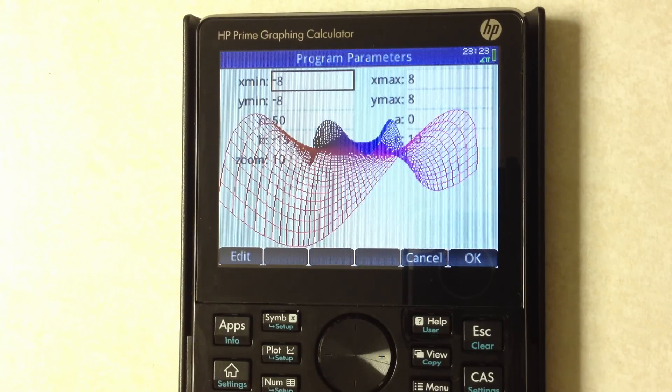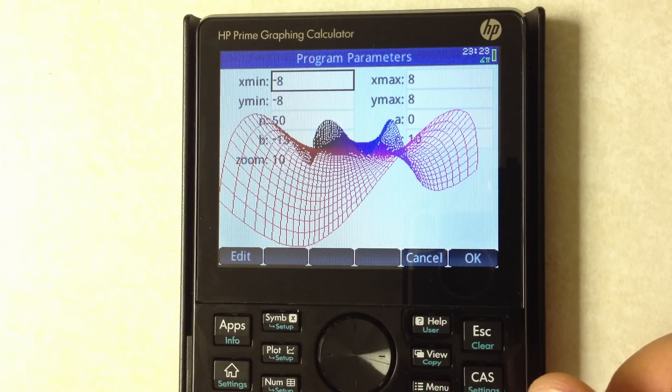And this is still graphing a lot faster than even on the 89, but here we've got you know 50 by 50 wireframe with color. So this is just a skeleton of what I would like to eventually turn into a 3D graphing app, which is something you can also create.